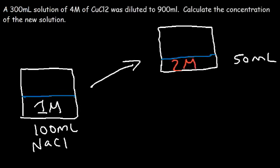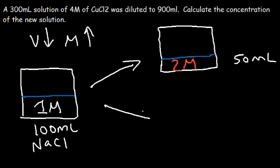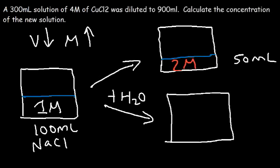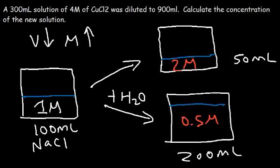Anytime you decrease volume, molarity goes up assuming the amount of solute stays the same. To decrease concentration without changing the solute amount, add water: adding H₂O increases volume, so doubling the volume to 200 mL reduces concentration to 0.5 M. Adding water dilutes the solution; removing water by evaporation concentrates it. Make sure you understand these concepts as they relate to dilution problems.